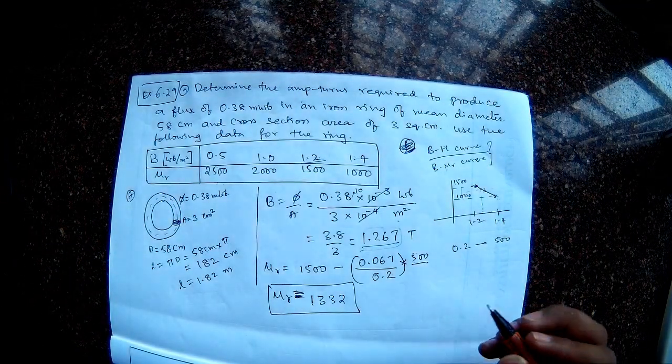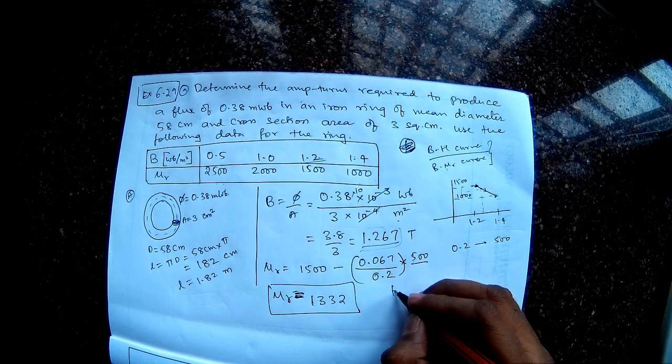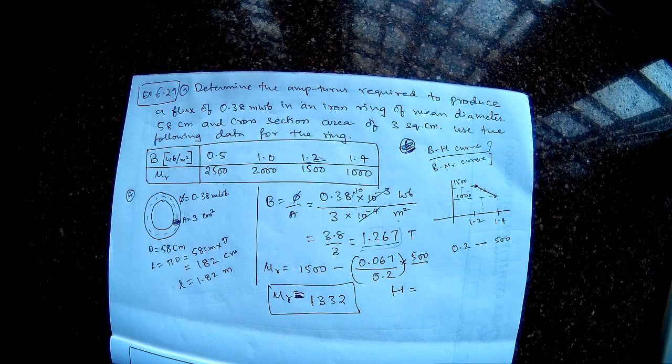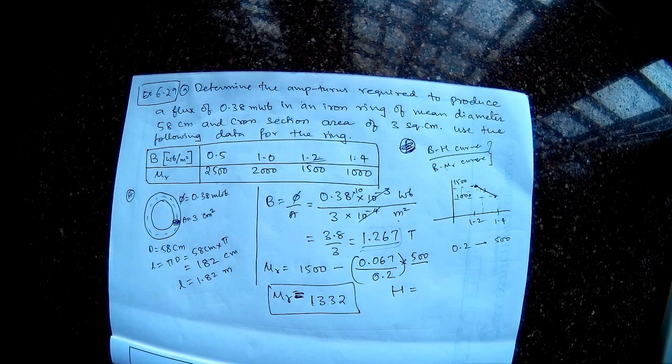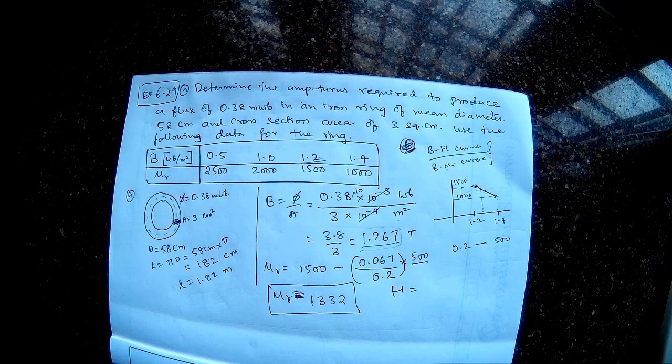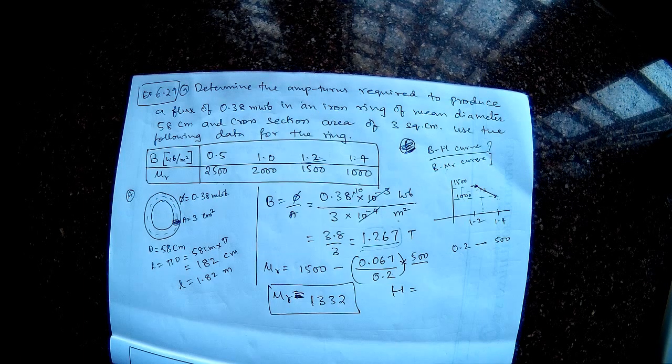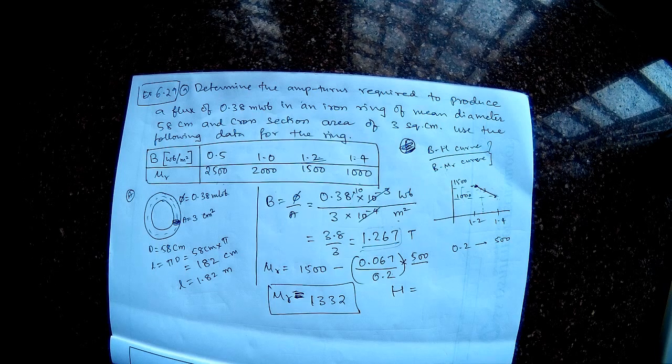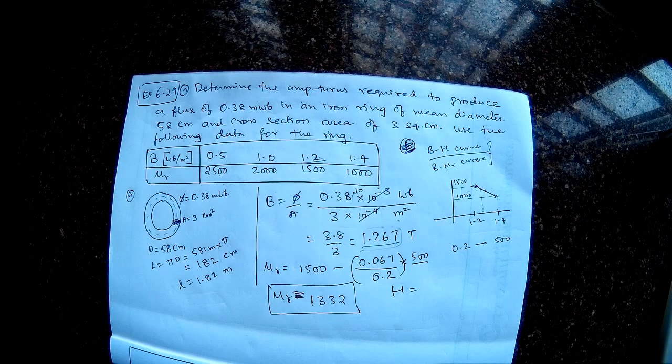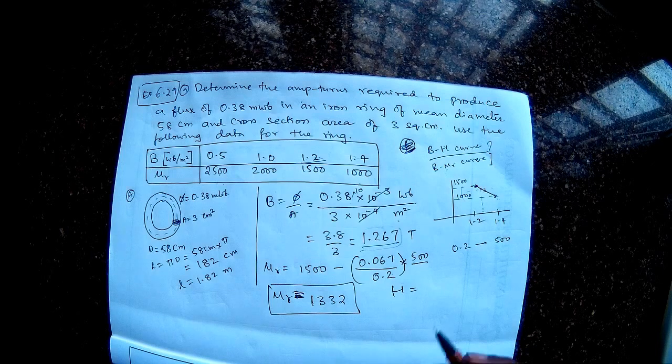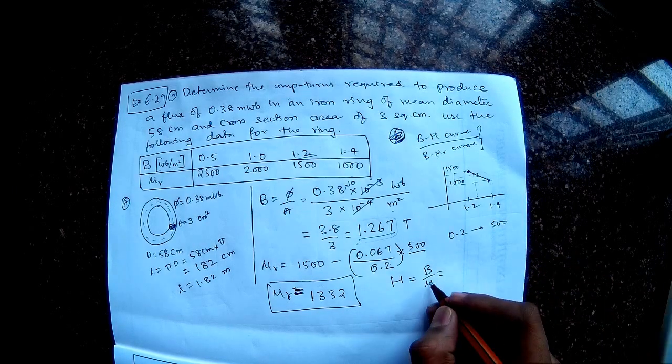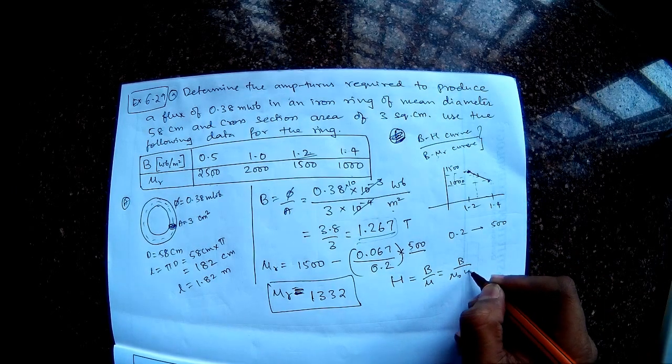Now that I know mu R, so I can find out what is H. So as you know H is nothing but B divided by mu. So the B is known. So what is mu? Mu naught into mu R. So I have everything.